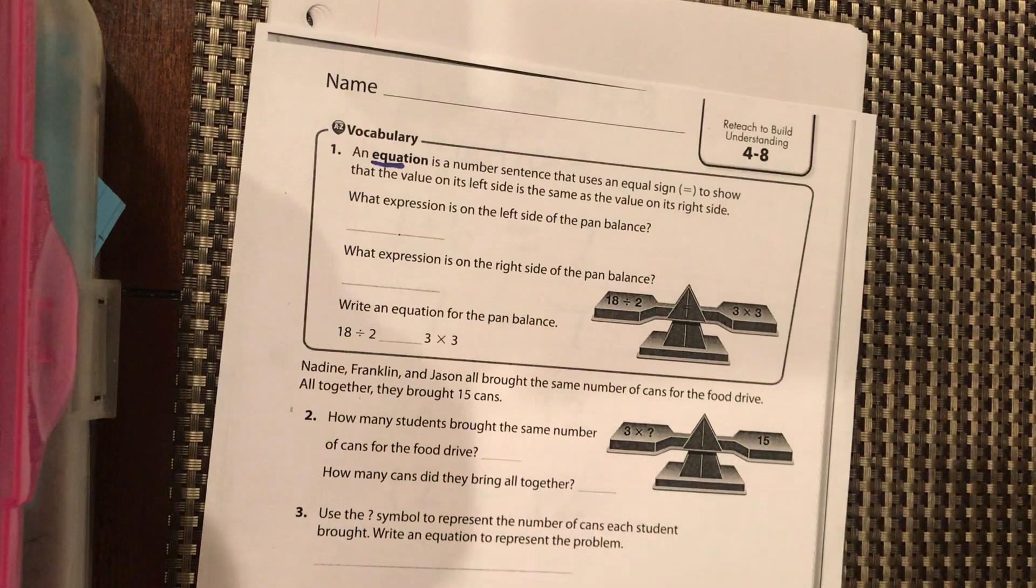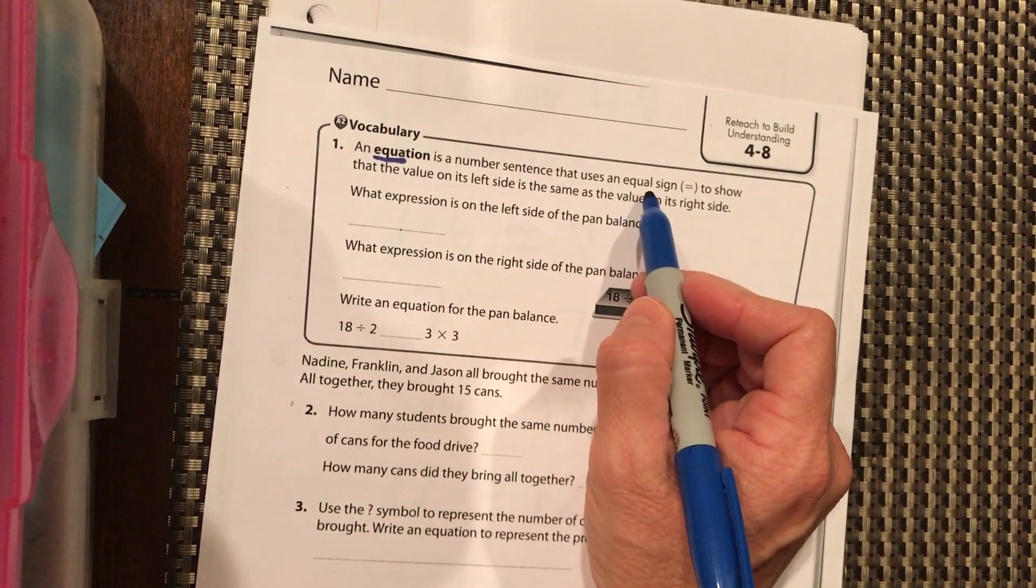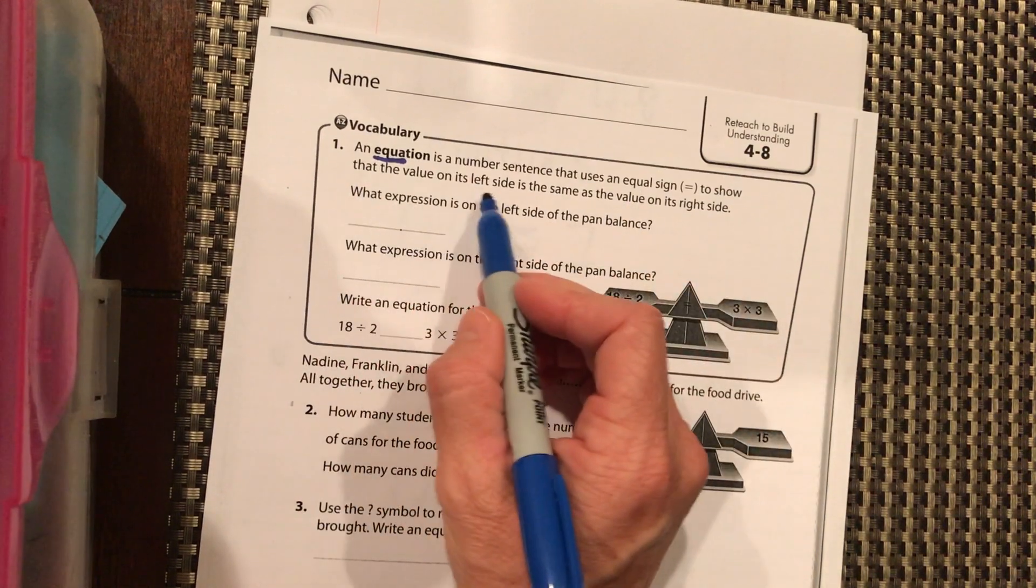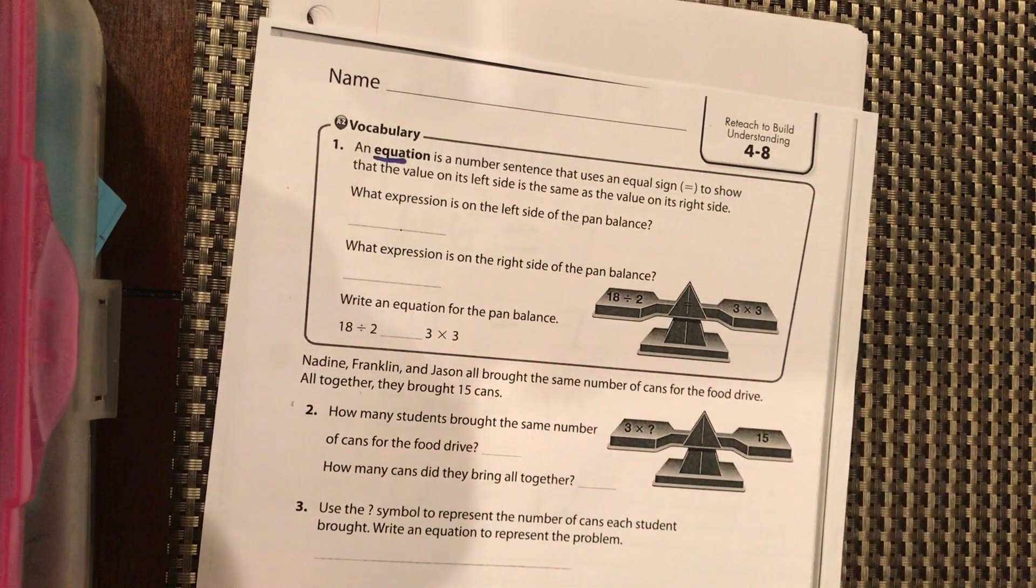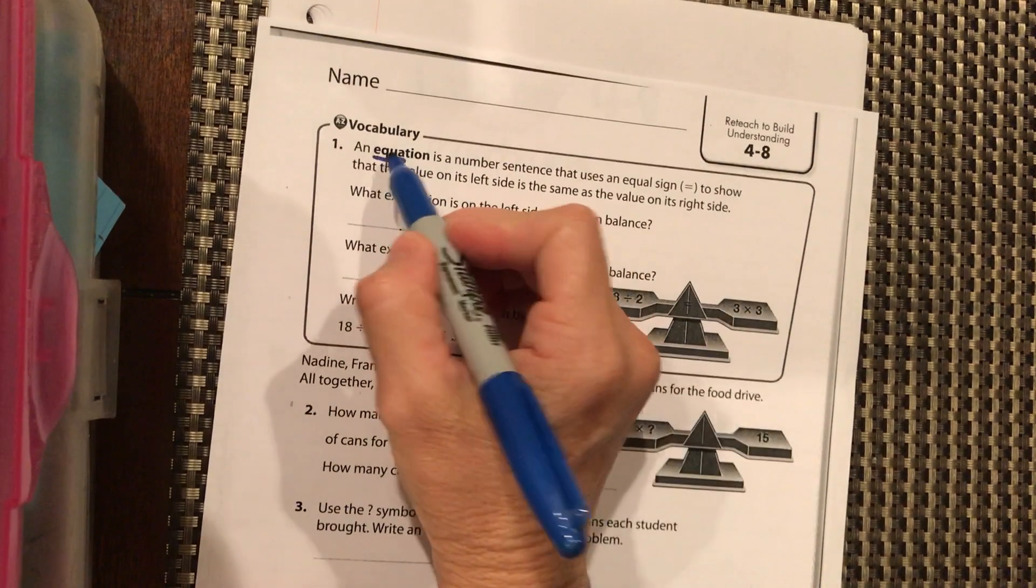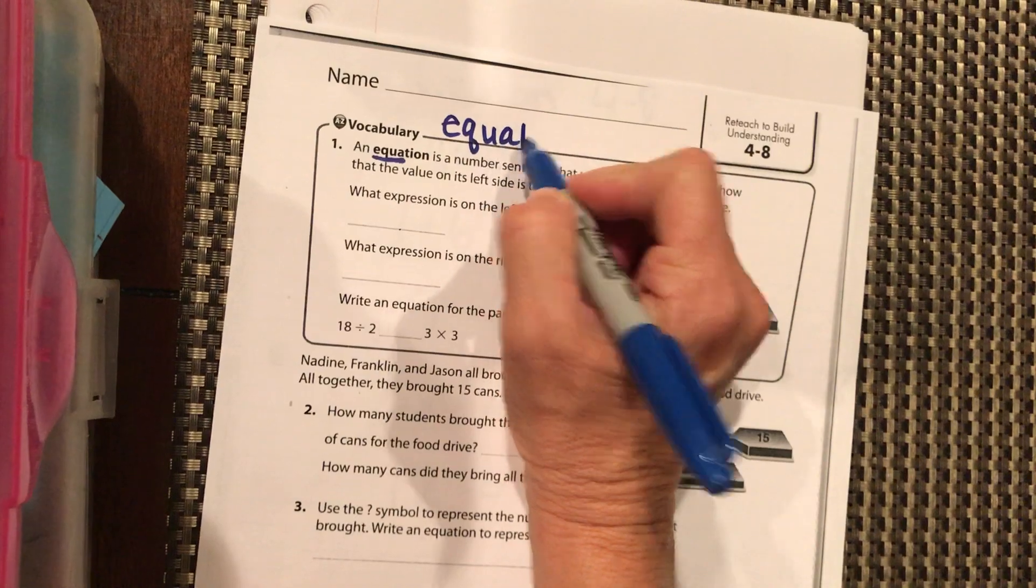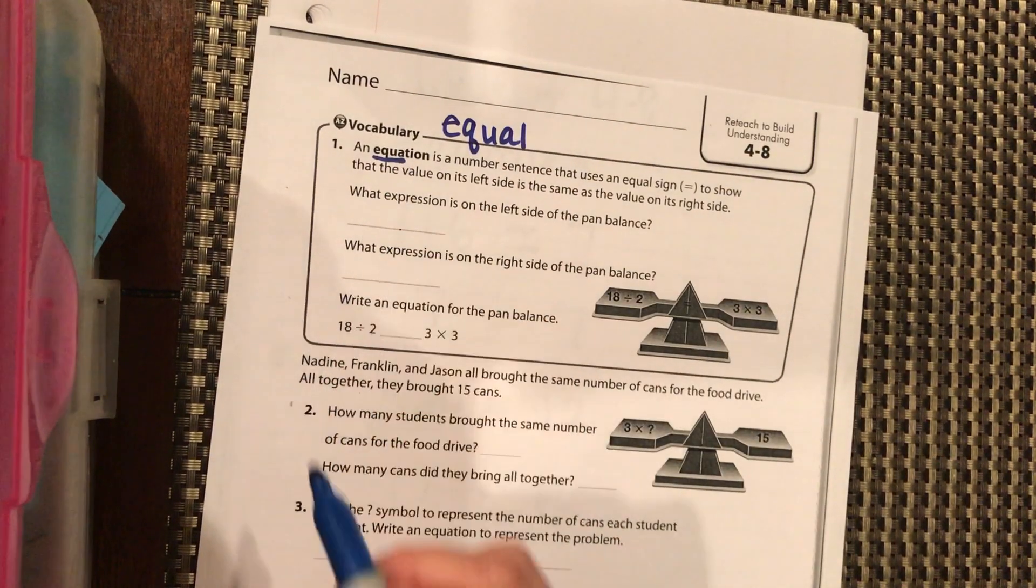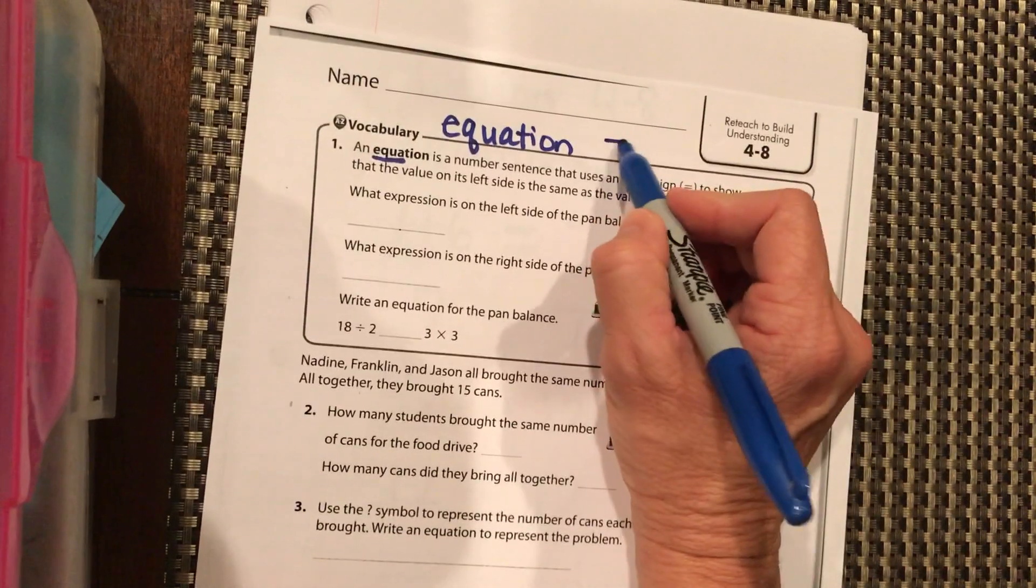So if we look at our page here for 4-8, an equation is a number sentence that uses an equal sign to show the value on the left side is the same value on the right side. It's like a scale, and we remember that equation almost has the word equal in it.